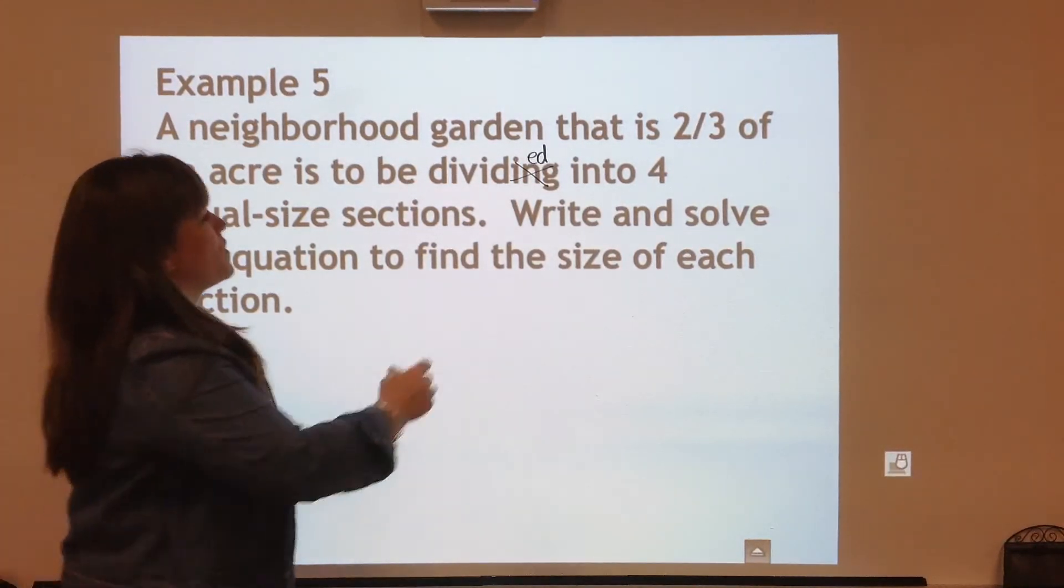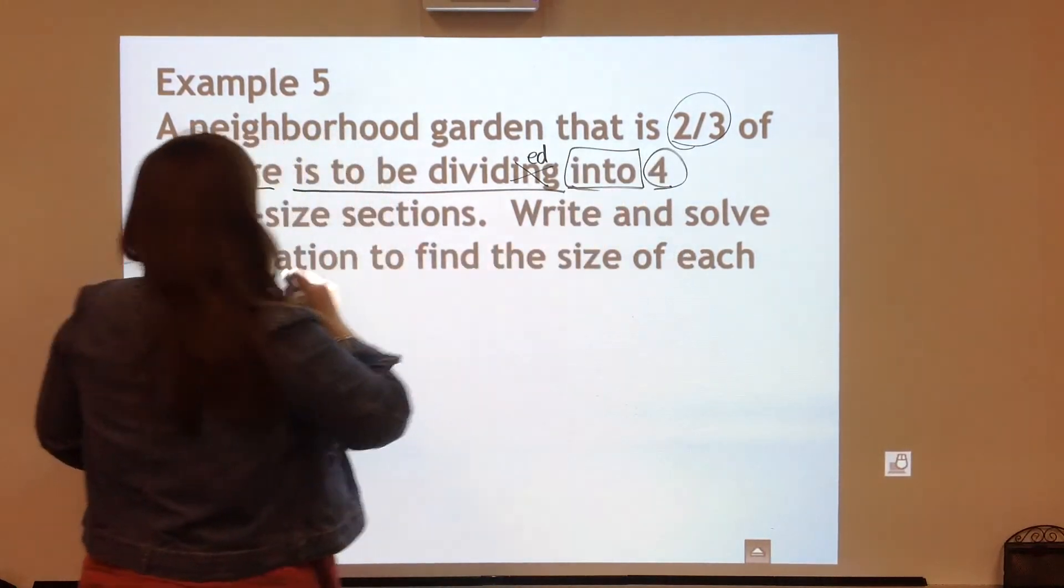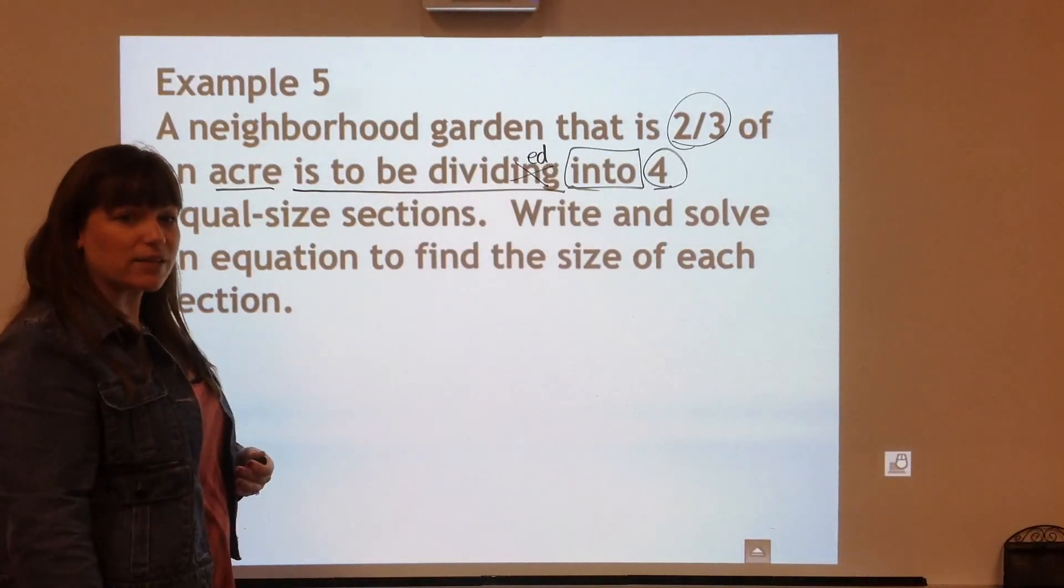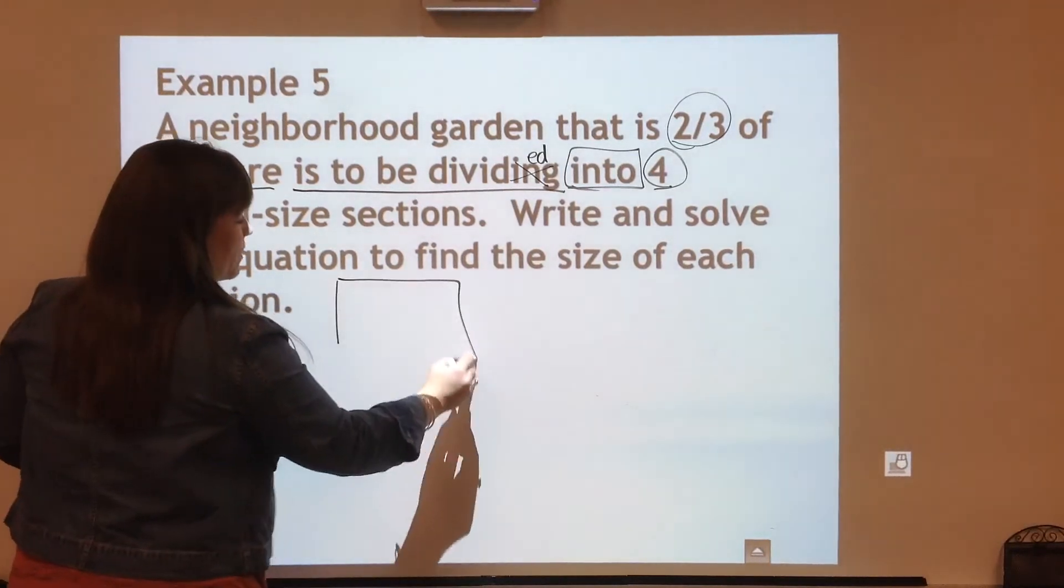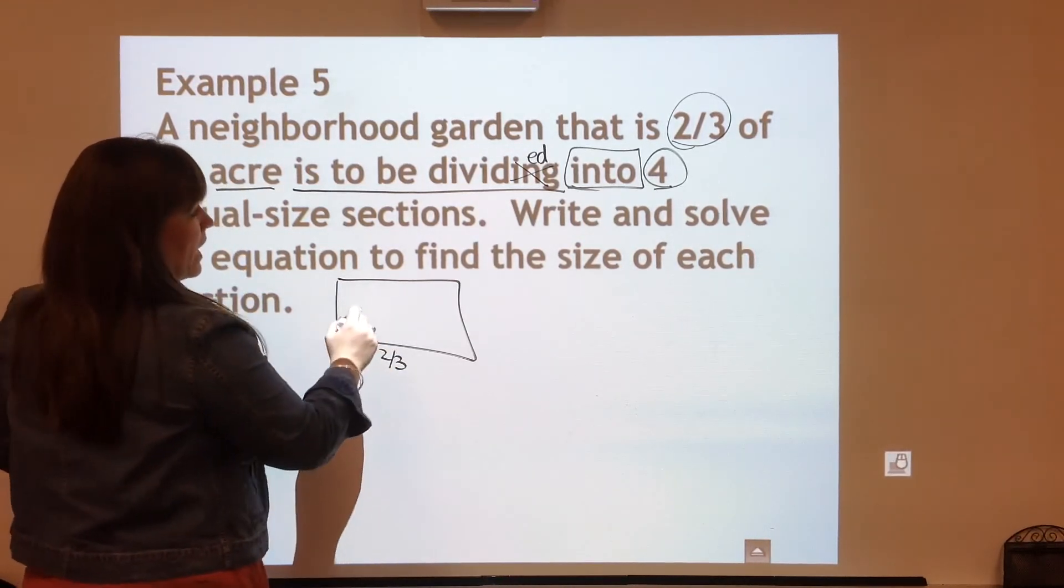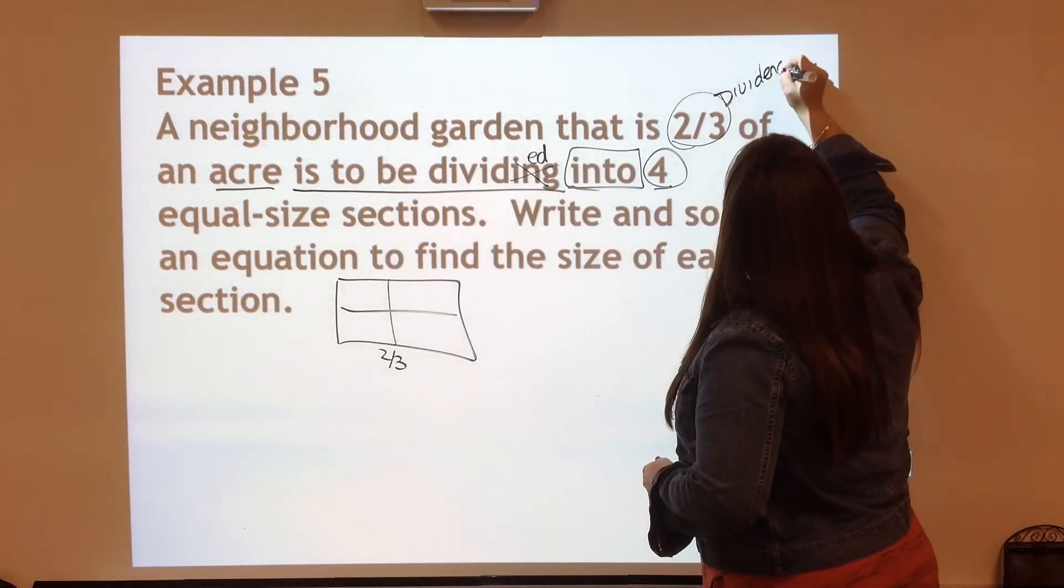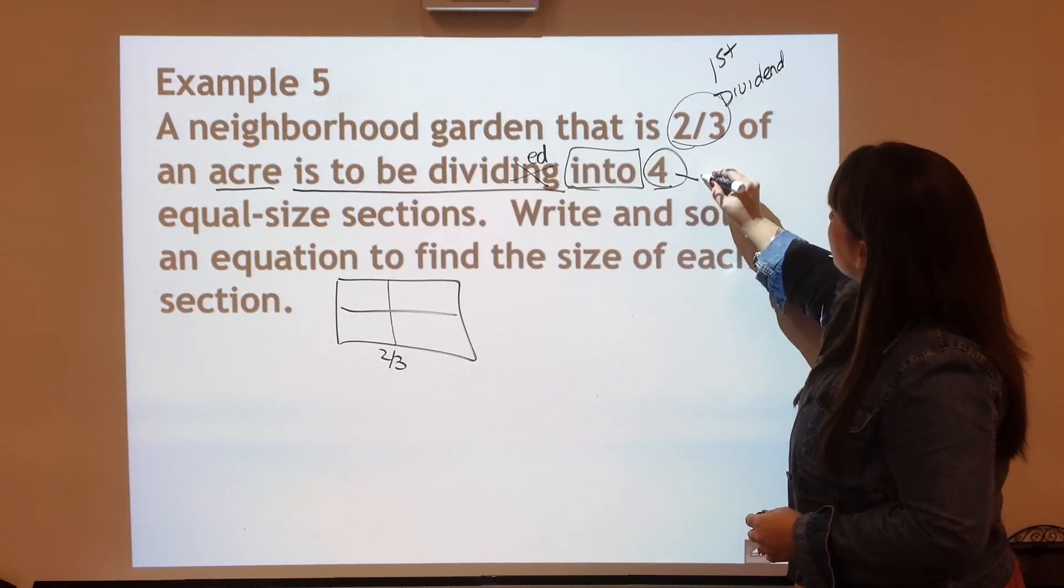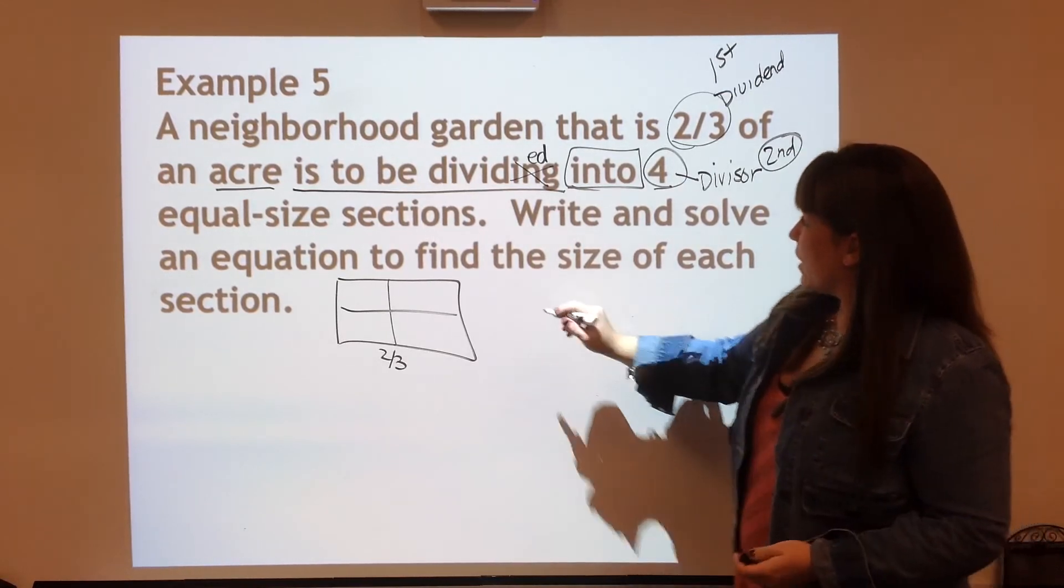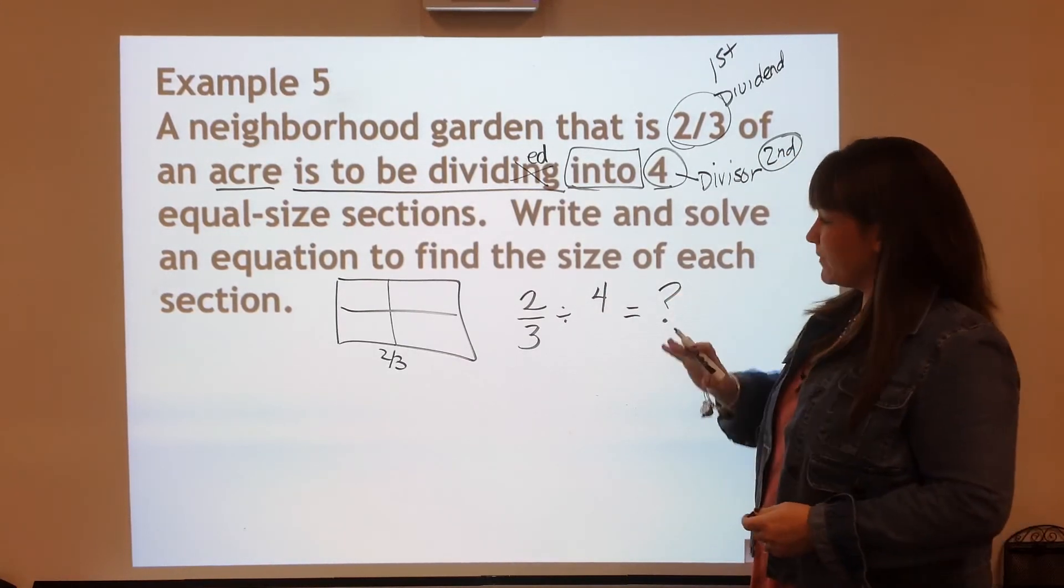Write and solve an equation to find the size of each section. So what's important? We have 2/3 of an acre is to be divided into four equal sized sections. So you have to decide which number comes first and it's the dividend and which number comes second and is the divisor. Again, we're going to start with a plot of land. How big is the plot of land? That is our starting spot. And then we're going to divide it into four equal sections. So I'm going to mark this up as my dividend. That's the first number I'm going to write in my equation. I'm going to mark this one as the divisor. That's the second number in my equation. So now my equation is going to be 2/3 being divided by four. And that's going to equal my answer. Here's our equation.